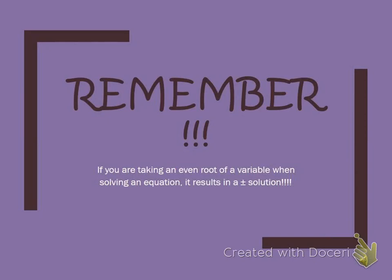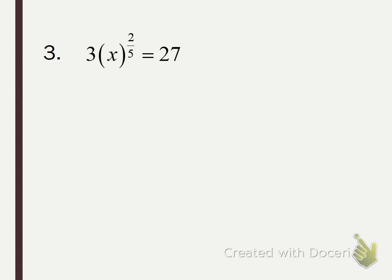Remember: if you take an even root of a variable in an equation, you have to include your plus or minus in your solution. Now here's an important point — just like with radicals we want to get the radical by itself first, we have to make sure the exponent is by itself before we try to eliminate it. Here, x is being raised to the two-fifths power, but this 3 is not — it has its own exponent of 1. Since it's not two-fifths, divide both sides by 3 first.